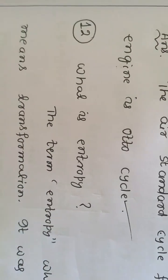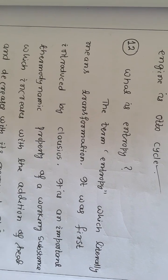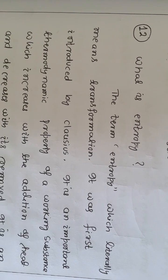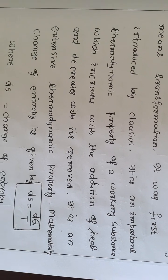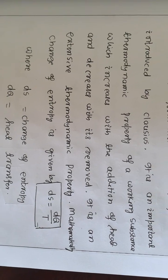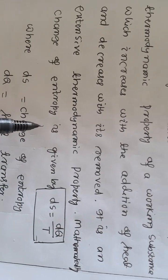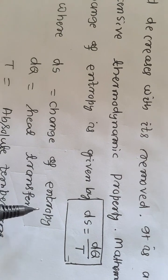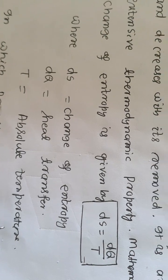What is entropy? The term entropy, which literally means transformation, was first introduced by Clausius. It is an important thermodynamic property of a working substance which increases with the addition of heat and decreases with its removal. It is an extensive thermodynamic property. Mathematically, change of entropy is given by dS is equal to dQ by T, where dS is change of entropy, dQ is heat transfer, and T is absolute temperature.